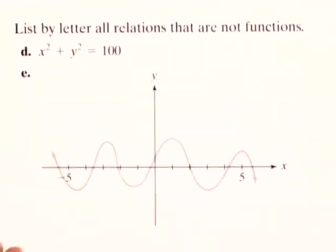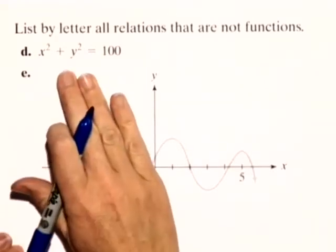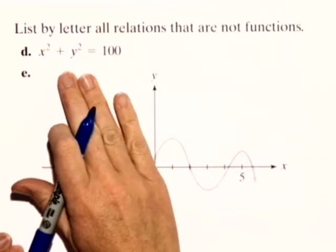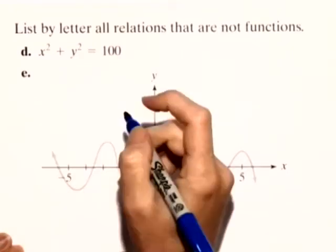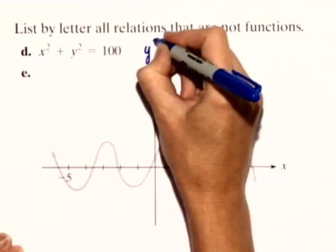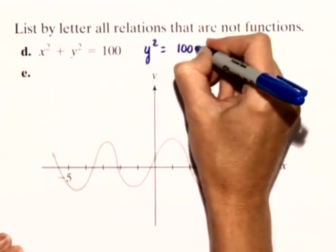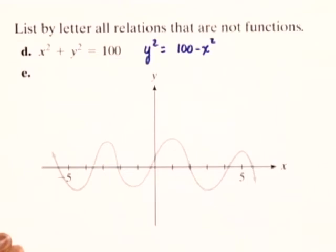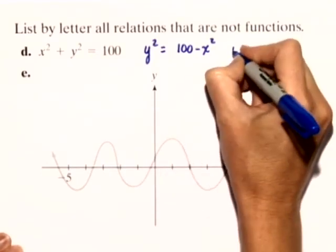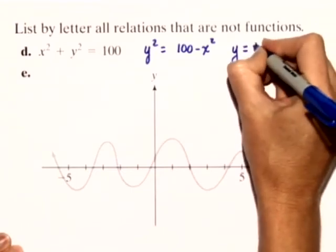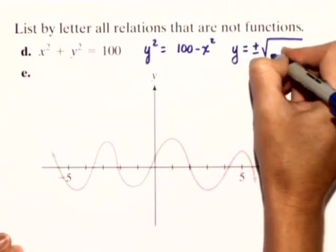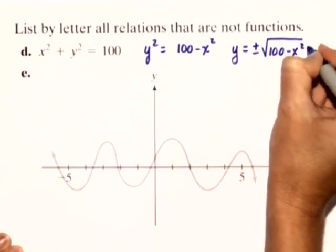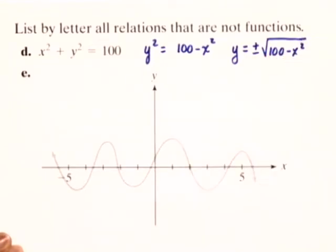In D, we actually have an equation. So the easiest way to determine whether or not this represents a function is to solve it for Y. So we could say Y squared equals 100 minus X squared, and then we could certainly take the square root of both sides. So we'll get Y is equal to plus or minus the square root of 100 minus X squared.